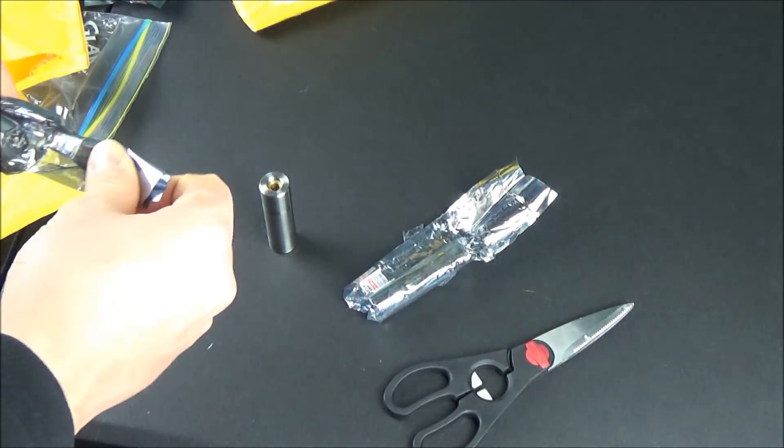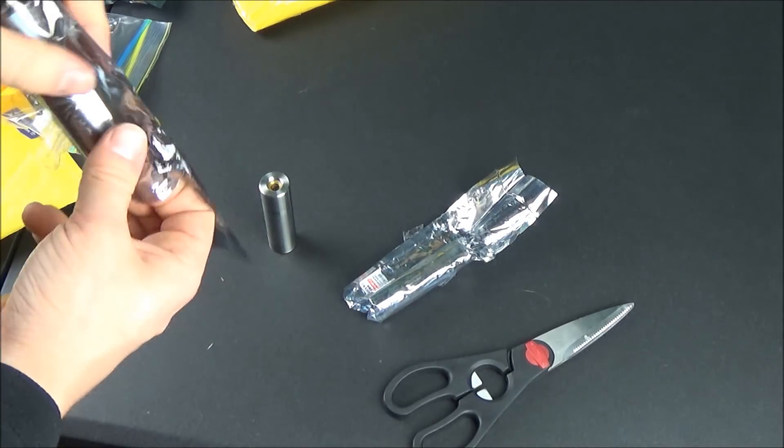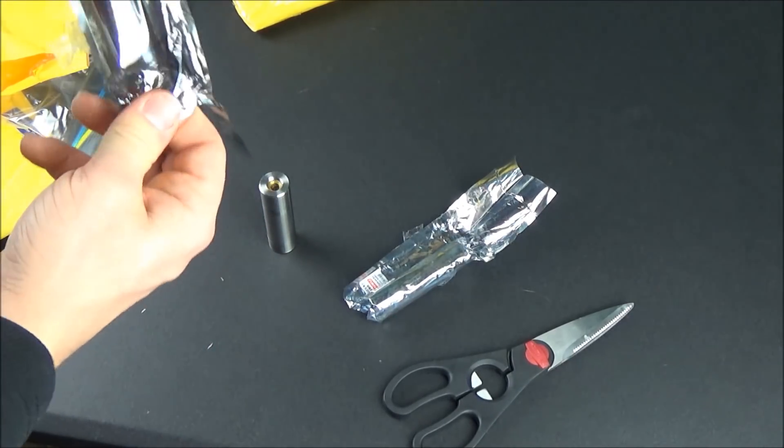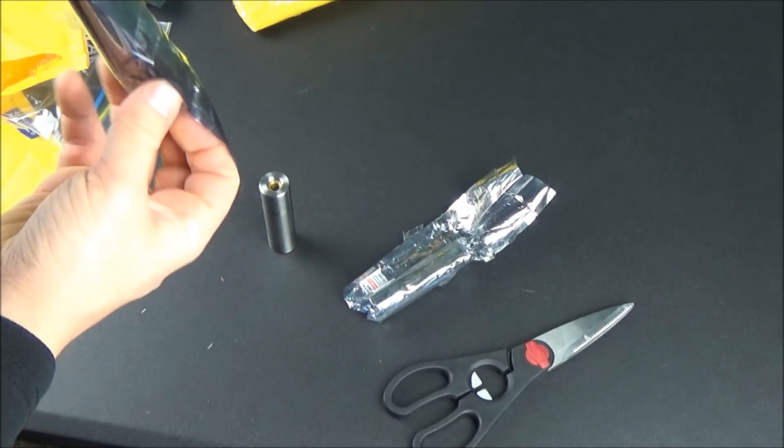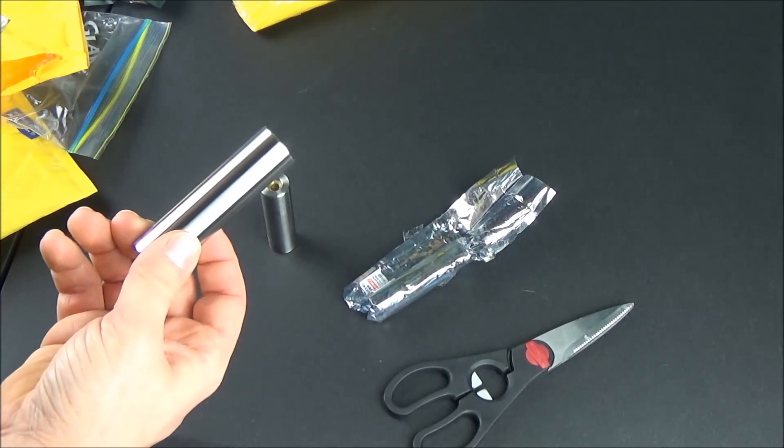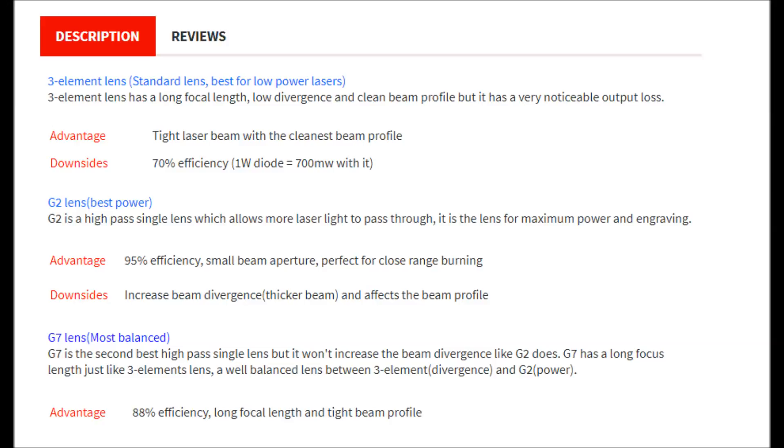It also has threads at the very top to attach attachments, and there are different lenses that you can buy. The one I have here, I'm assuming, is the standard three element lens that comes with all of their lasers. Then you can upgrade to either a G2 or G7, and right here on the screen are the advantages and disadvantages to each one of these lenses.